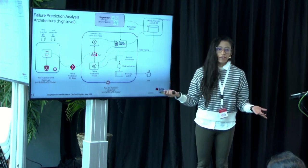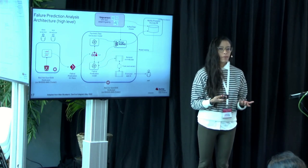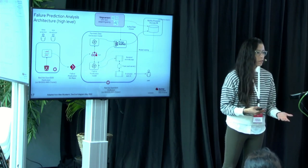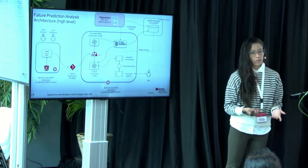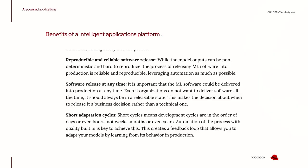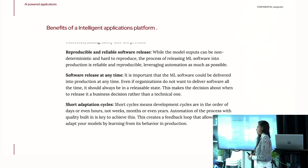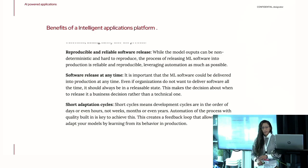Everything is regenerated and automated using practices you already have in place, because most applications are not new — you have to integrate AI into what you already have. The benefits of using a platform like OpenShift are that you can deliver code for intelligent applications in a reproducible and reliable way, and you apply the best software practices in an opinionated way to streamline your whole lifecycle.